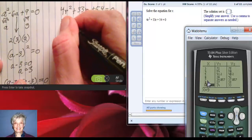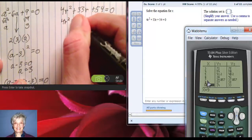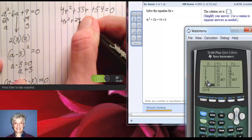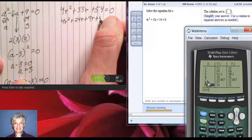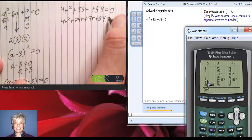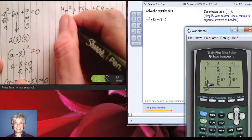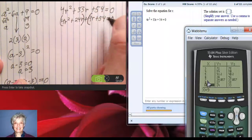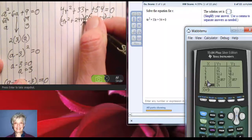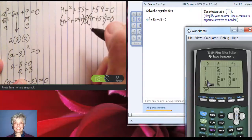So I'll say 4r² + 24r + 9r + 54 = 0. Now I put parentheses around the first two terms, parentheses around the second two terms. I'm very careful to leave the plus sign in the middle.